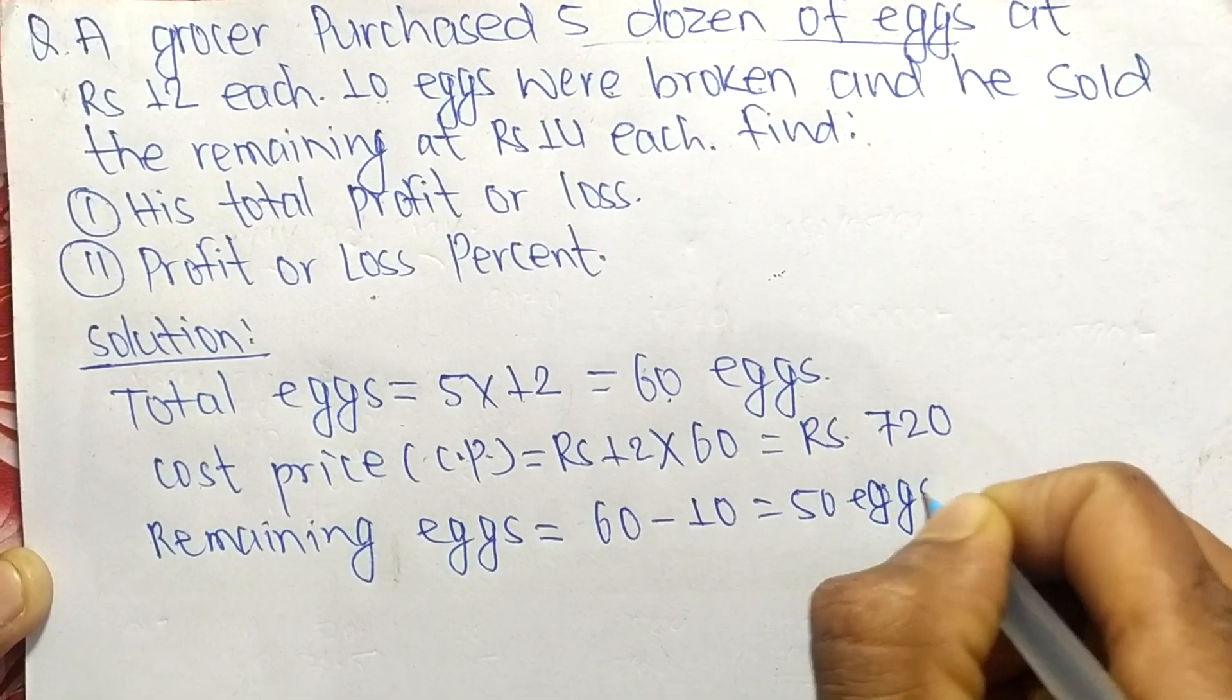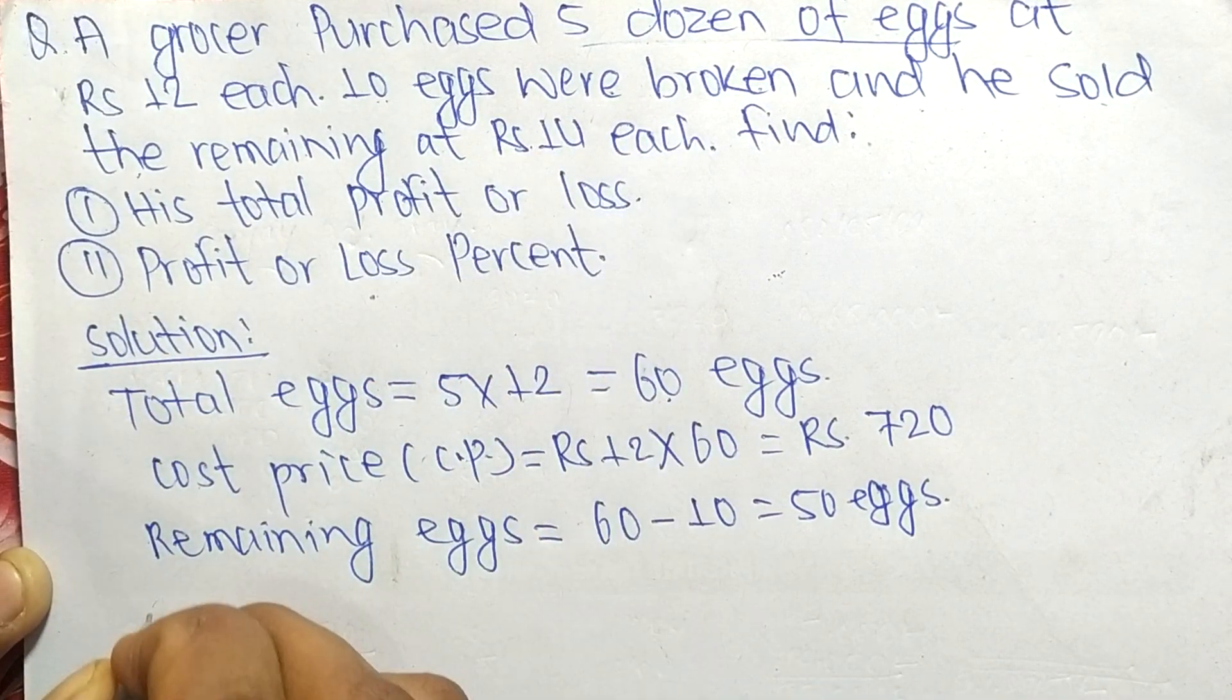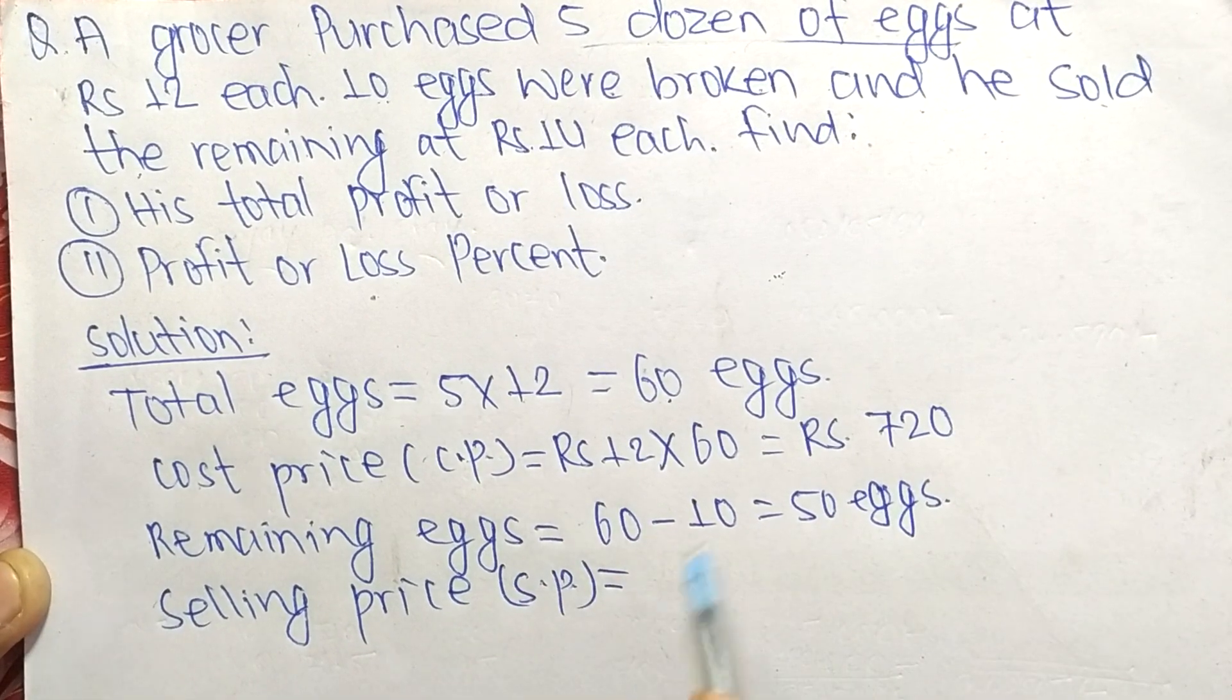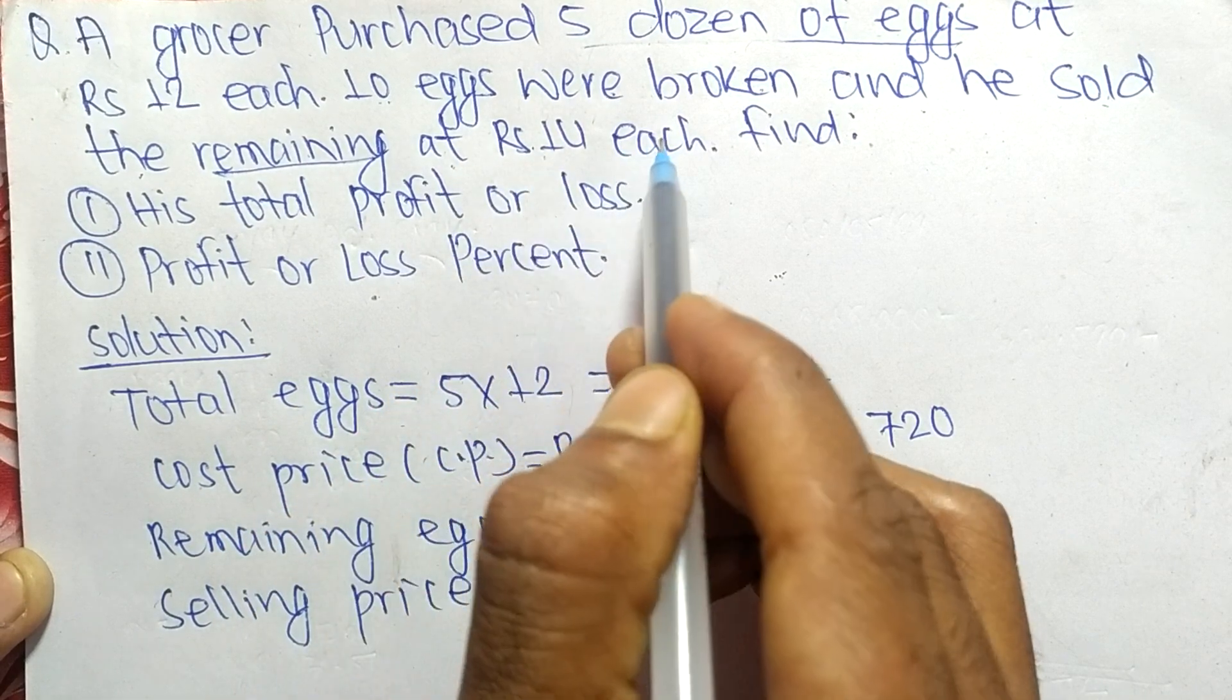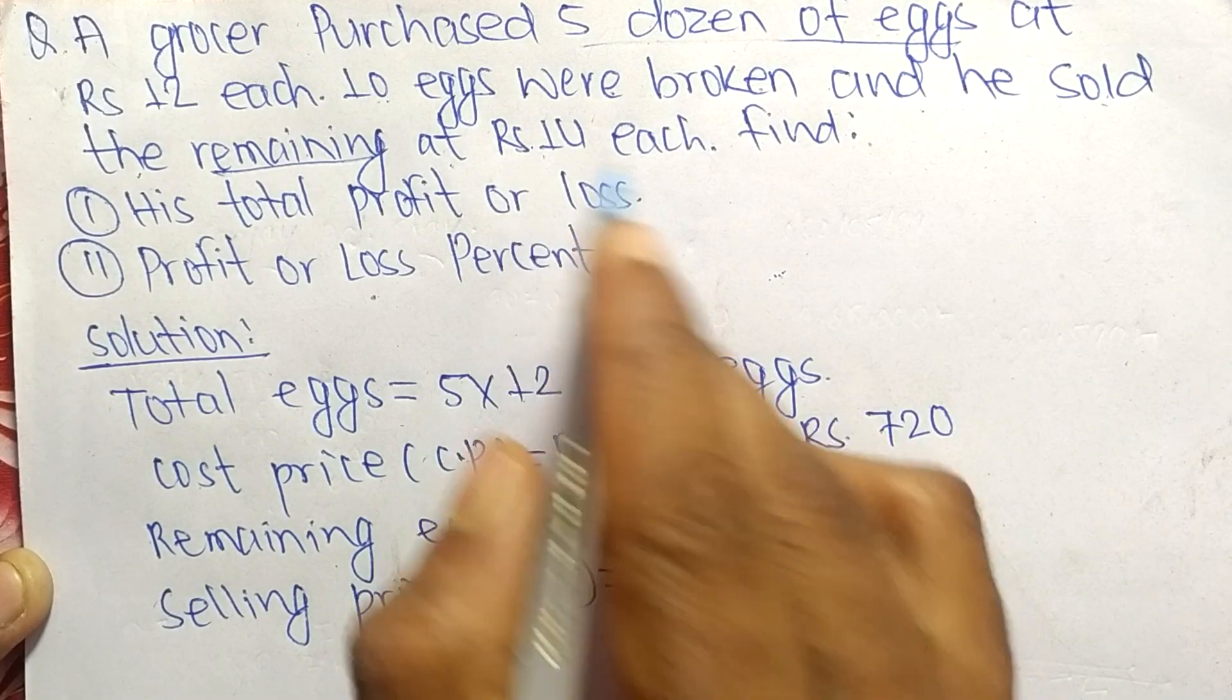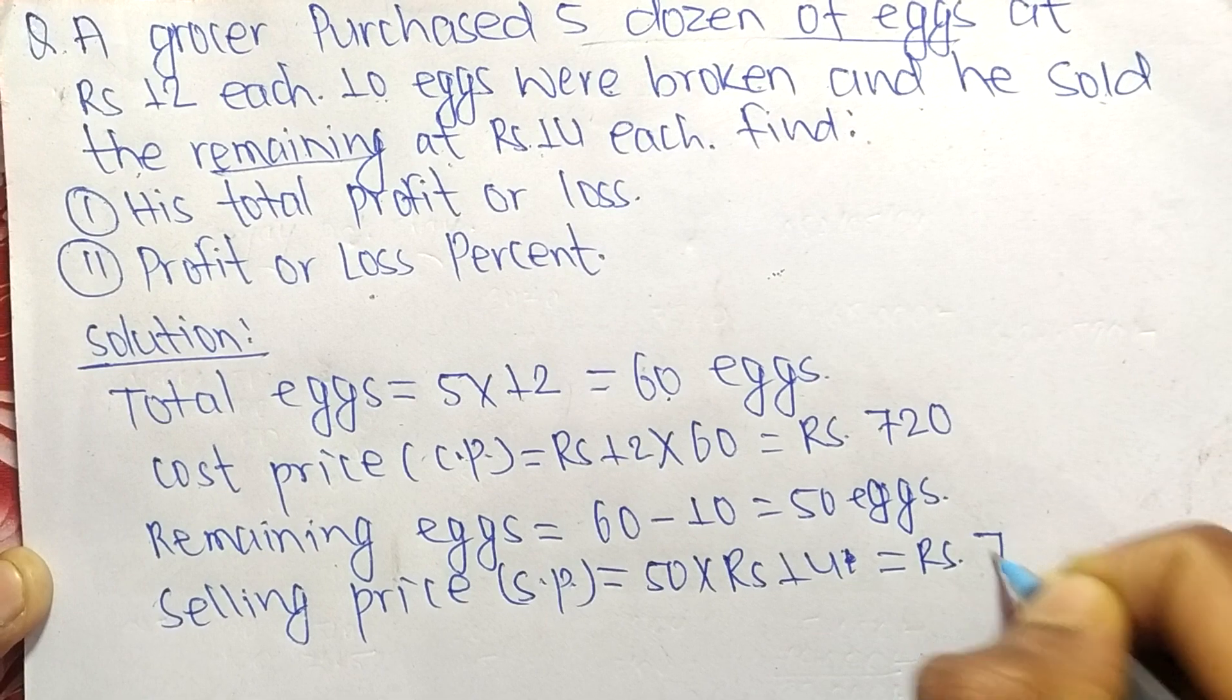He sold the remaining eggs at Rs 14 each. Remaining eggs = 50, sold at Rs 14 each = Rs 700 total.